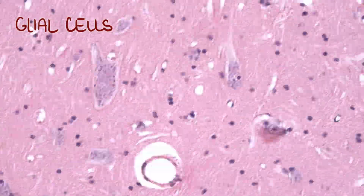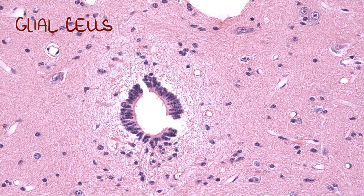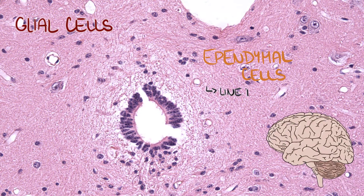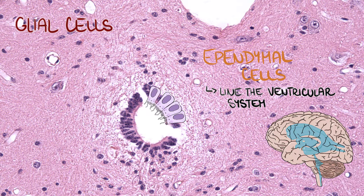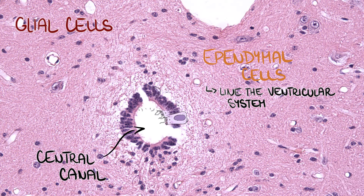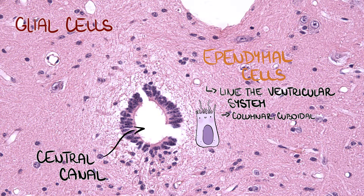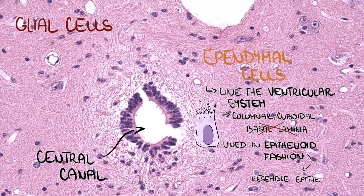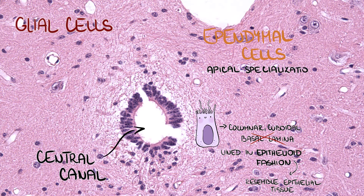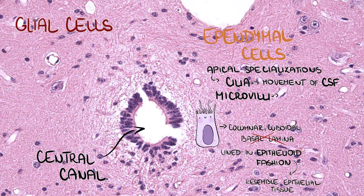The last type of glial cells found in the central nervous system are ependymal cells. These cells line the ventricular system, and we can find them in the region of the central canal in the spinal cord. They look like epithelial cells — they are columnar or cuboidal — but they lack a basal lamina, so we say they are lined in epithelioid fashion. They have apical specializations like cilia, which facilitate the movement of cerebrospinal fluid, and long microvilli, which help in absorption. They are also involved in formation of the fluid.